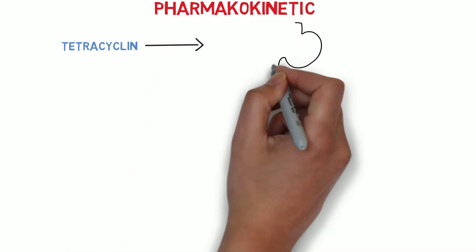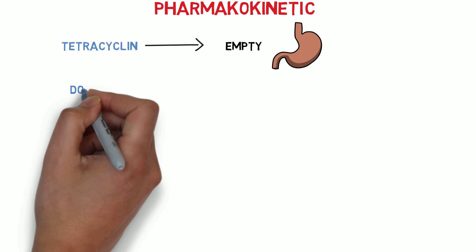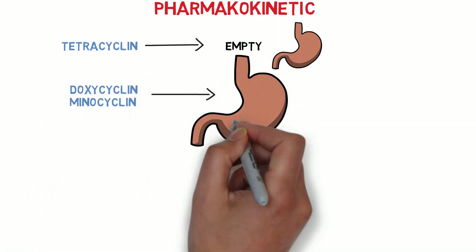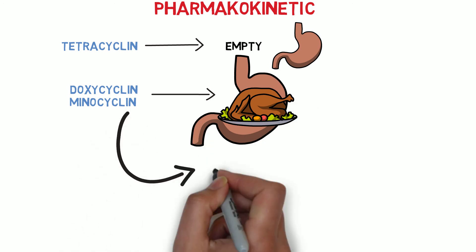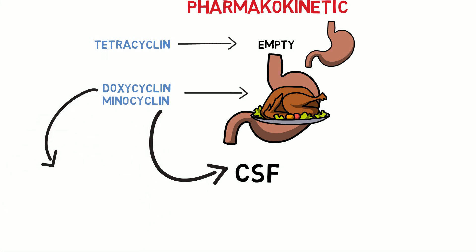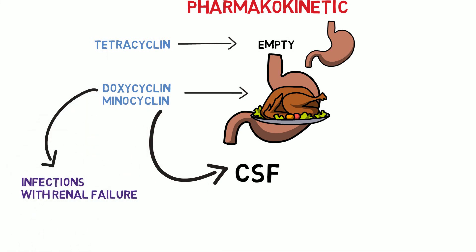Regarding pharmacokinetics, tetracycline is generally given on an empty stomach, but drugs such as doxycycline and minocycline can be given with food. Minocycline maintains sufficient levels for therapeutic efficacy in the CSF. Doxycycline can be given in cases of infections with renal failure because it is excreted via bile through feces.